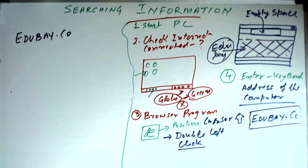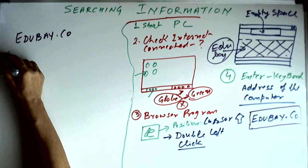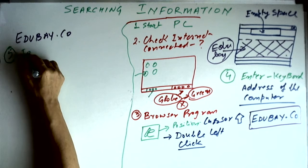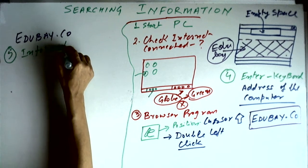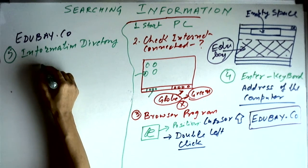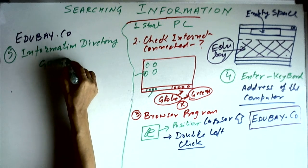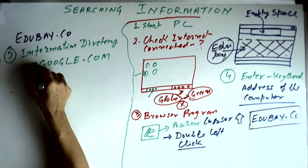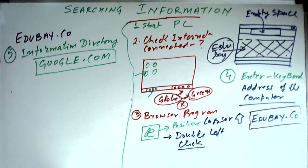Now, suppose you don't know the address. If you don't know the address, then you have to go to something called an information directory. You have to go to a website called google.com. If you don't know the address, type google.com and this address will take you to the computer of the company Google.